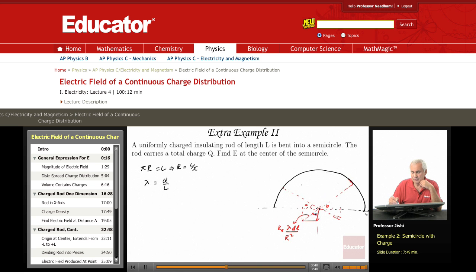This angle is theta here, so this angle is 90 minus theta. The vertical component is k lambda dl over r squared times cosine 90 minus theta. Cosine 90 minus theta is just sine theta.